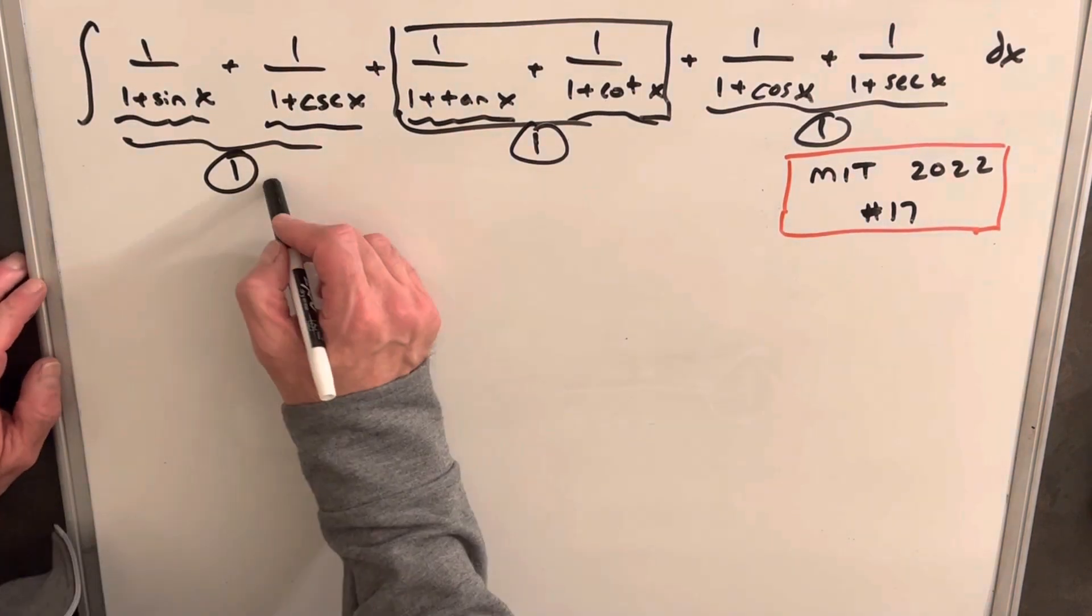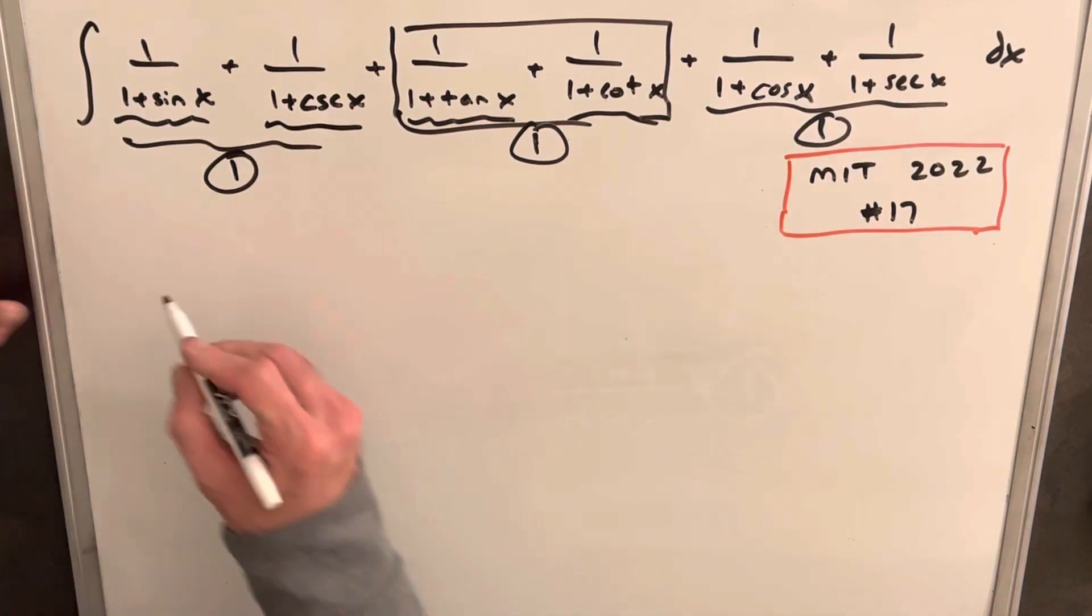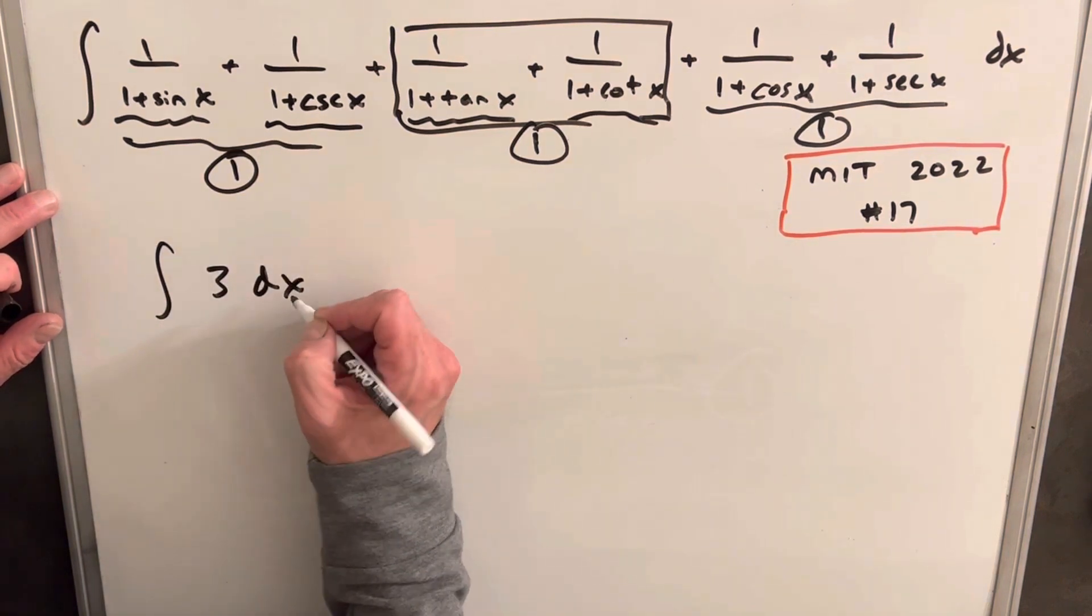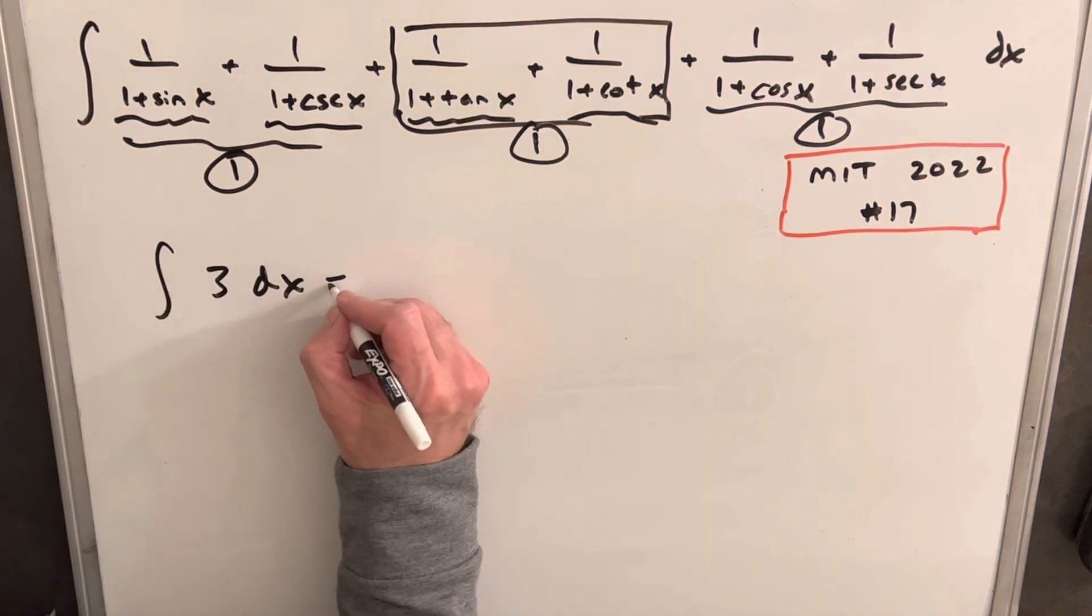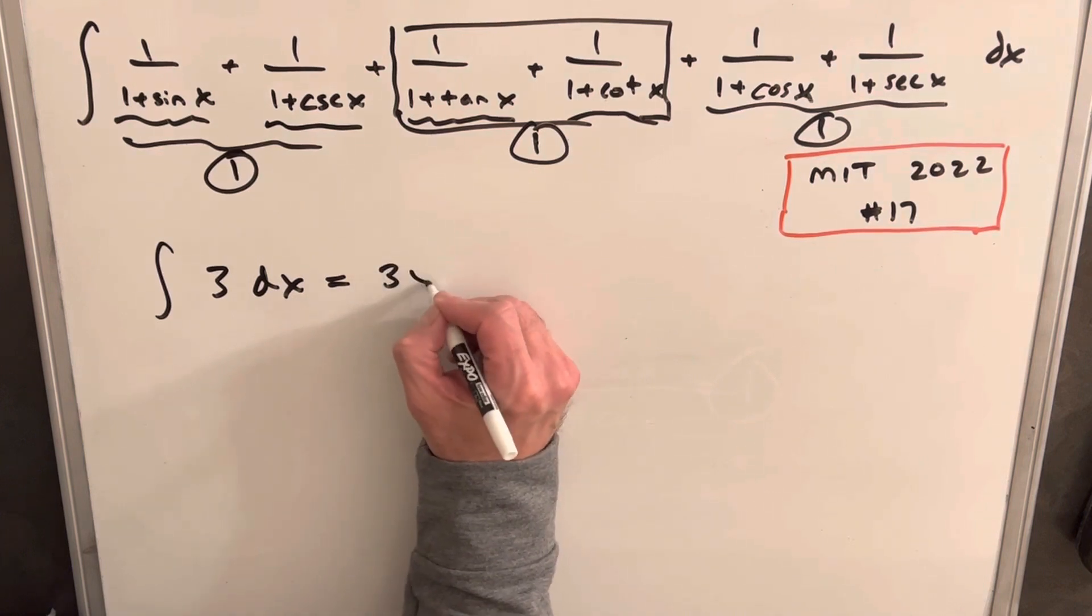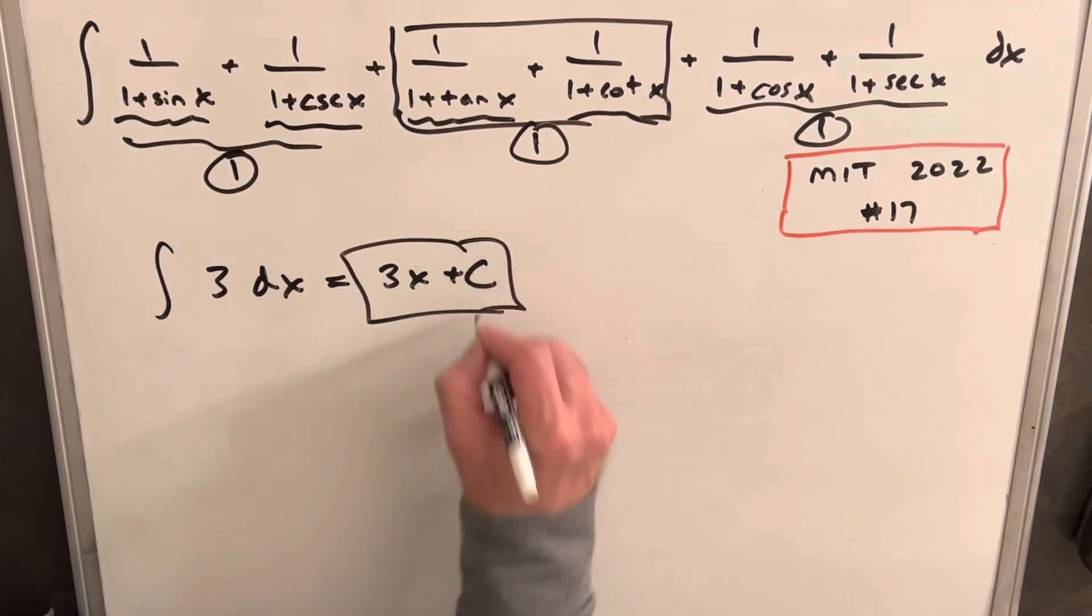So then since we're just adding 1 plus 1 plus 1, we can rewrite our whole integral as the integral of 3 dx. And then we have just about as easy an integral as we can get. And it's going to be 3x plus c. And we're done.